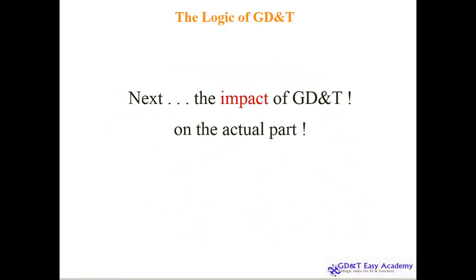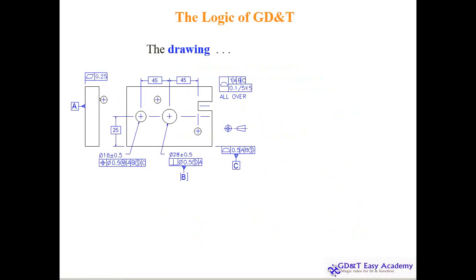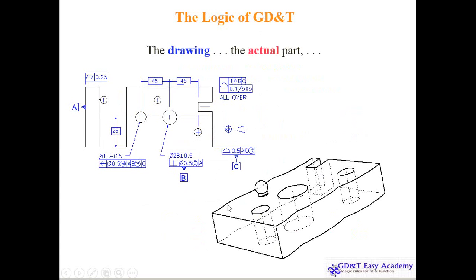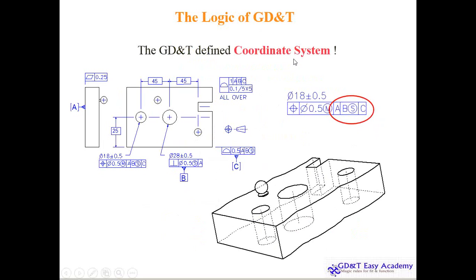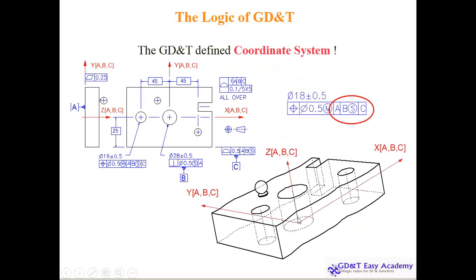Next, the impact of GD&T on the actual part. If this is the GD&T drawing and this is the actual part, as I was discussing, you will get variation everywhere, and still it guarantees the fitment and function to a particular extent. GD&T defines the coordinate system - you can see the coordinate system here, maybe the center of the hole, maybe the corner, maybe this hole. Wherever you define it, all the features are integrated with respect to this zero-zero-zero. You can see the XYZ just for the reference.